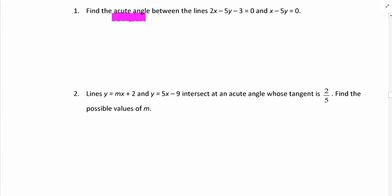So let's have a look at this first example. It says find the acute angle between the lines 2x - 5y - 3 = 0 and x - 5y = 0. Now, there's that concept of taking a very good look at the information given in the question. This applies here just as much as it did in proving those identities.